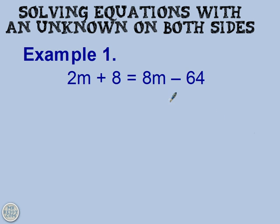So our first example, 2m plus 8 is equal to 8m take away 64. So what I mean when I say there's an unknown on both sides is that there is a variable, an unknown variable, on both sides of the equal sign.